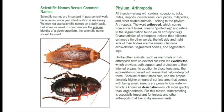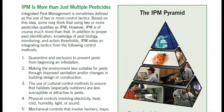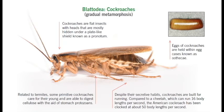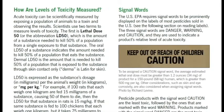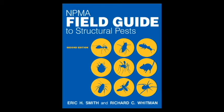Written in everyday language that is easy to understand, the ACE study guide covers introductory concepts of integrated pest management, insect classification and biology, an outline of pesticide concepts, and an overview of important safety and regulatory issues. Designed to be used with the MPMA Field Guide to Structural Pests,